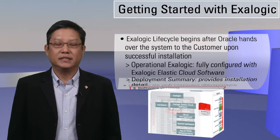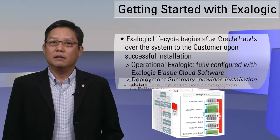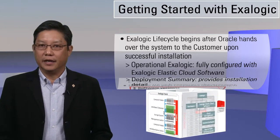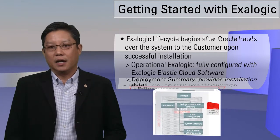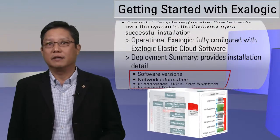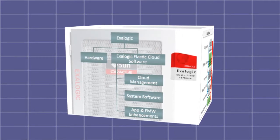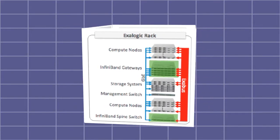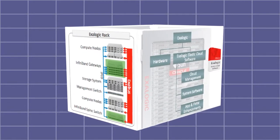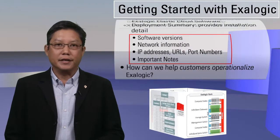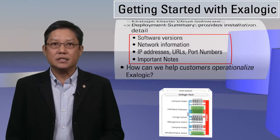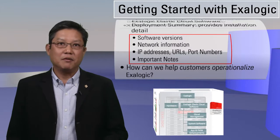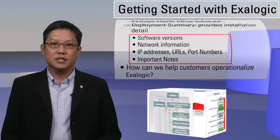From the customer's perspective, the ExoLogic lifecycle begins right after Oracle ACS hands over the system to the customer upon successful installation of the ExoLogic machine. When we hand over the system, the process includes an operational ExoLogic machine that is fully configured with ExoLogic Elastic Cloud software. Also included is the deployment summary, which provides installation details about the software versions installed on the system, detailed network information including all IP addresses, URLs, port numbers, DNS information, NTP servers, and so on, as well as some key important notes from My Oracle Support.